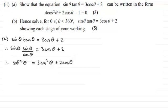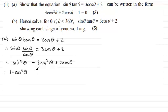We should be familiar with the identity sine squared theta plus cos squared theta equals 1. Rearranging that gives us sine squared theta is identical to 1 minus cos squared theta. So we substitute 1 minus cos squared theta in place of sine squared theta, giving 1 minus cos squared theta equals 3 cos squared theta plus 2 cos theta.